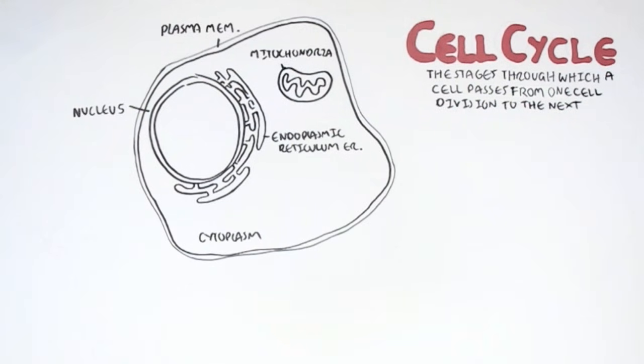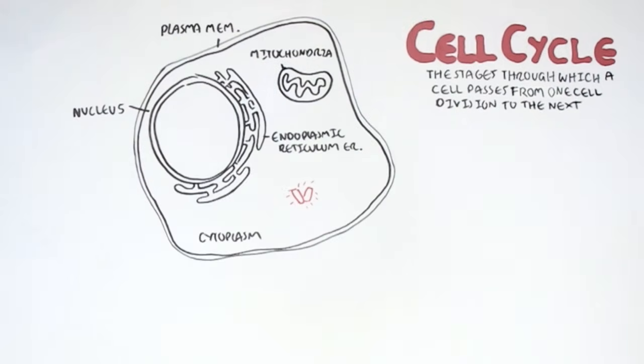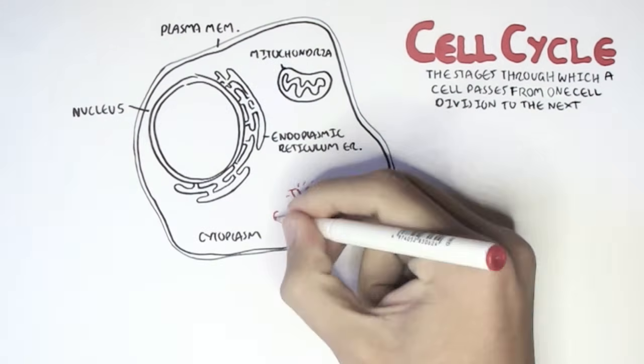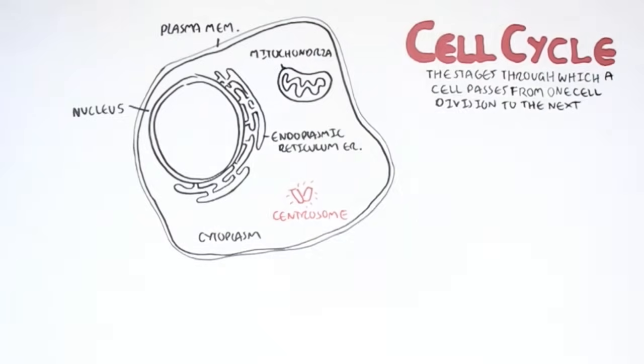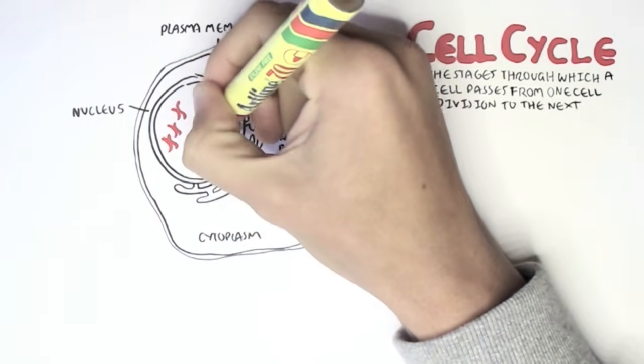The main thing to take out of this is that in the cytoplasm, we also find centrosomes. Centrosomes are important in cell division because they actually help in separating the cells with their microtubules.